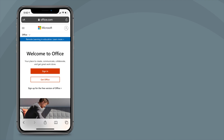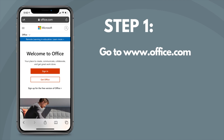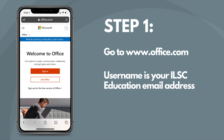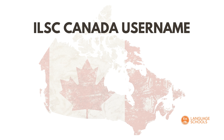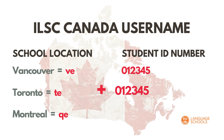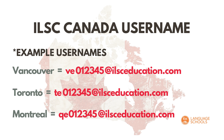Using your preferred device, step one is to go to office.com to set up your free Microsoft 365 student account. Your username is your ILSCEducation email address. If you study English or French, your username will look like this: school location and program code plus your student ID number, then add at ILSCEducation.com. Here are some examples of usernames for English or French students in Vancouver, Toronto, or Montreal.